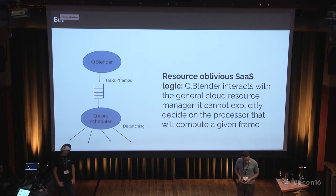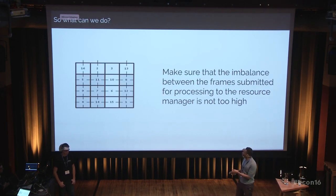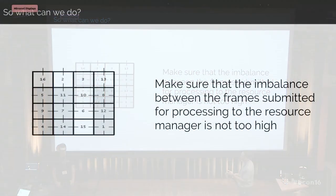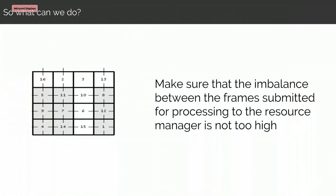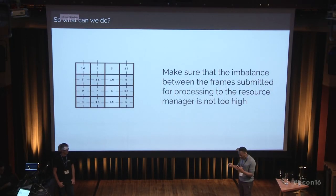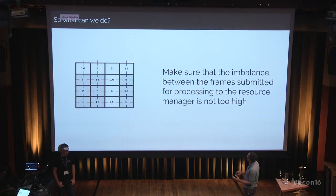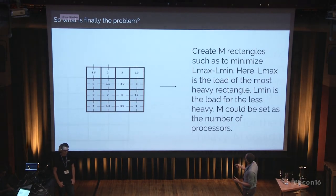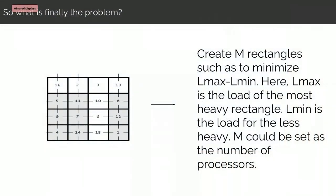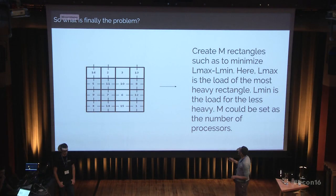Because of this, we were obliged to formulate the problem differently. We thought that regardless of how the scheduler is designed, if we send a set of tasks, one way to reduce imbalance is to make sure that if the scheduler groups these tasks together, they will finish at almost the same time. So the question becomes: if you have M processors, try to create M blocks such that the difference between the maximum load and the minimal load is reduced.